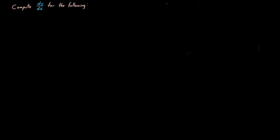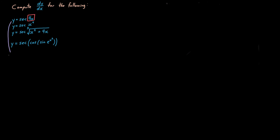As nice as that colorful version of the Leibnizian chain rule is, eventually you want to wean yourself off of it because it can get tedious. So let's try to do these without falling back on the colorful Leibnizian chain rule. For this first one, I'm taking secant of some variable stuff — that stuff is not a simple x, it's 4x. So the derivative of y with respect to orange is secant of 4x times tangent of 4x, and the derivative of orange with respect to x is just 4.